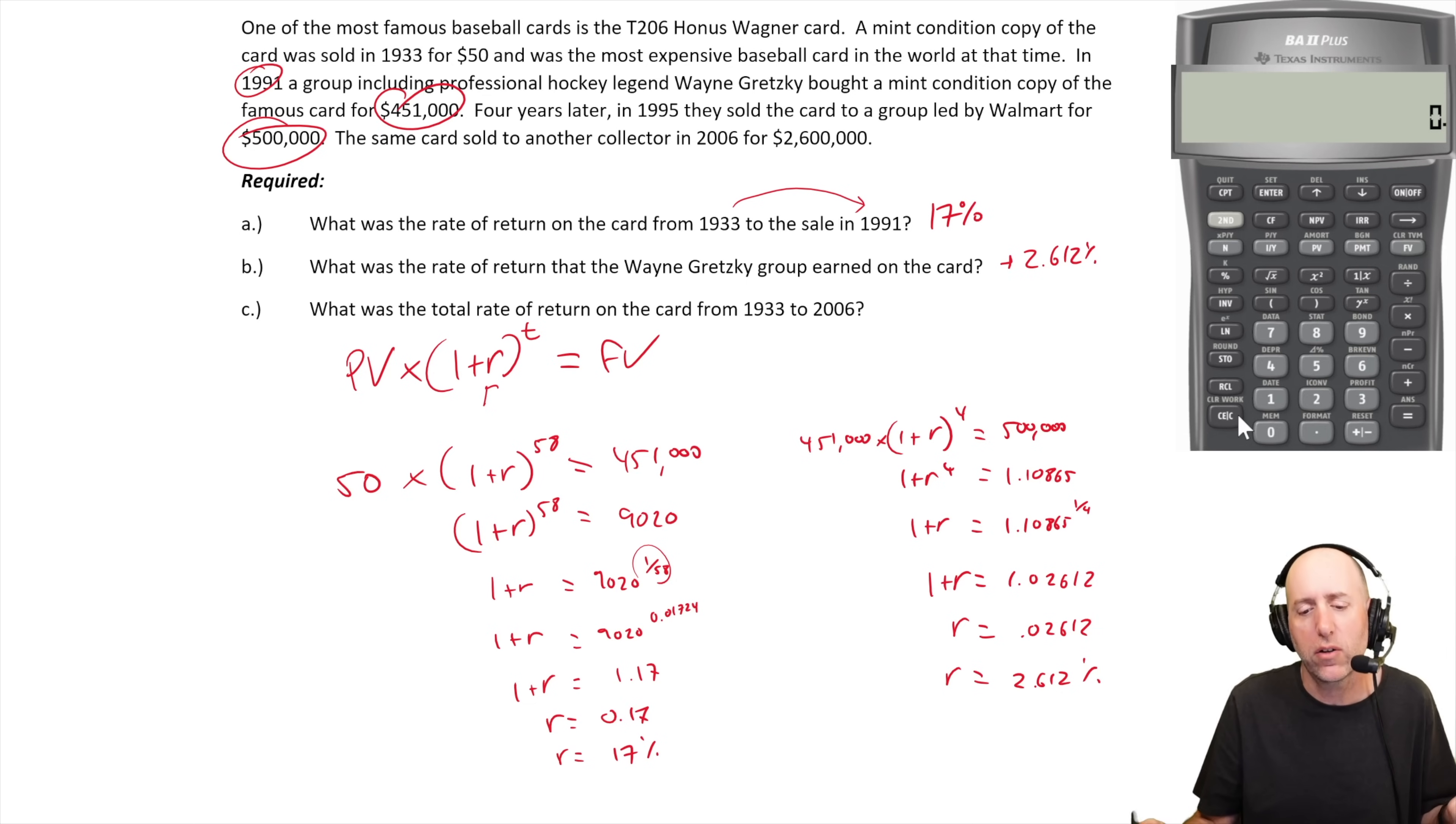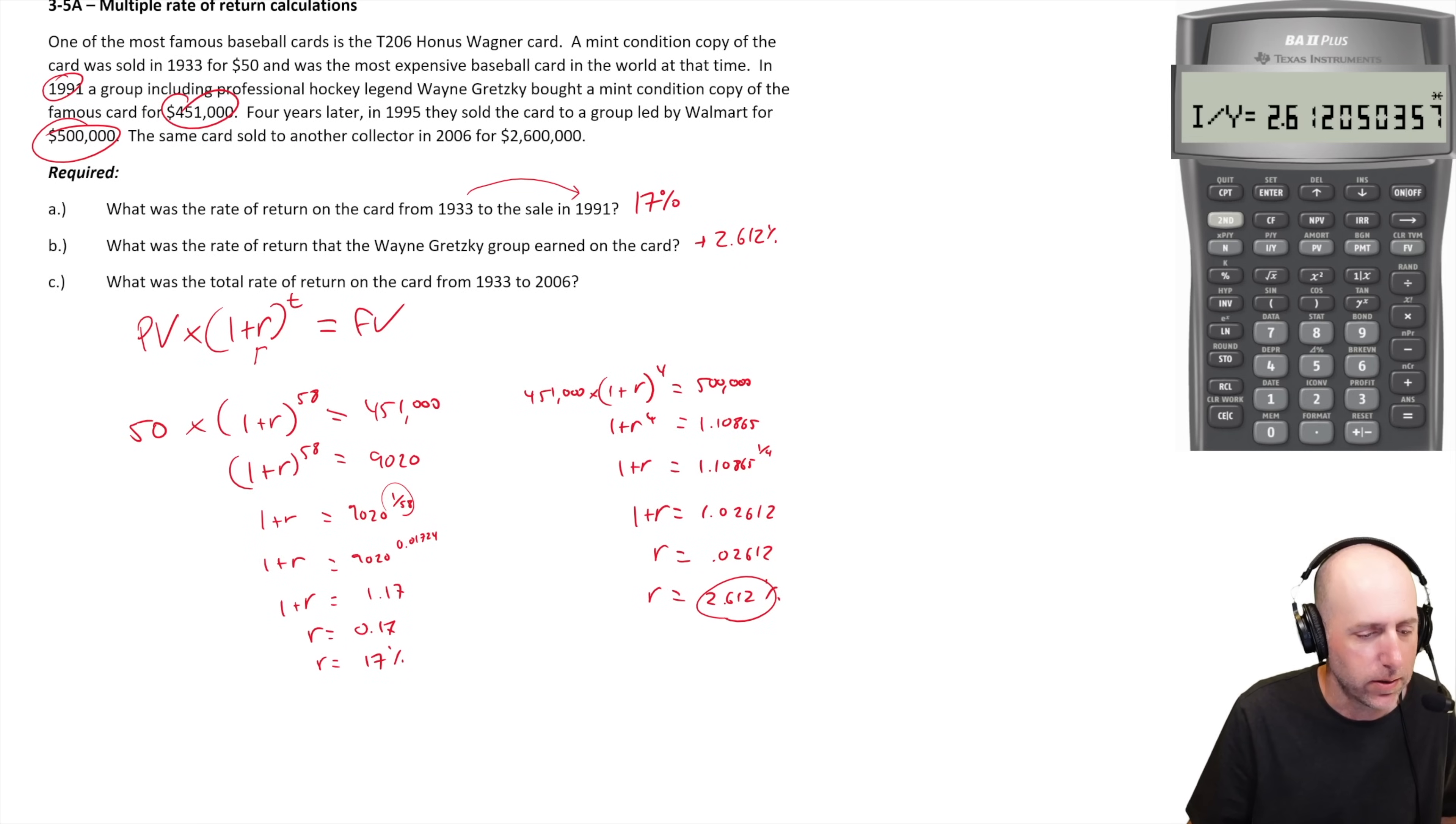Let me show this in the financial calculator just in case you were curious. Let's do the Gretzky group. We won't do them all in the financial calculator, we'll do the last one by hand. Make sure everything's cleared. Our present value is $451,000 negative - we make a $451,000 investment to get $500,000 in the future, that's our FV. We enter the n as 4, our payment is zero, and then we compute the i/y and you can see 2.612, the same answer.